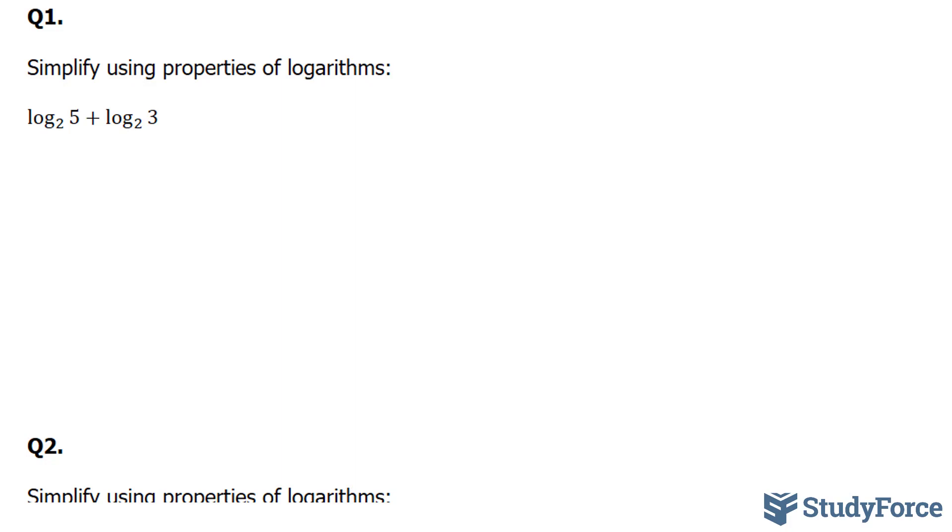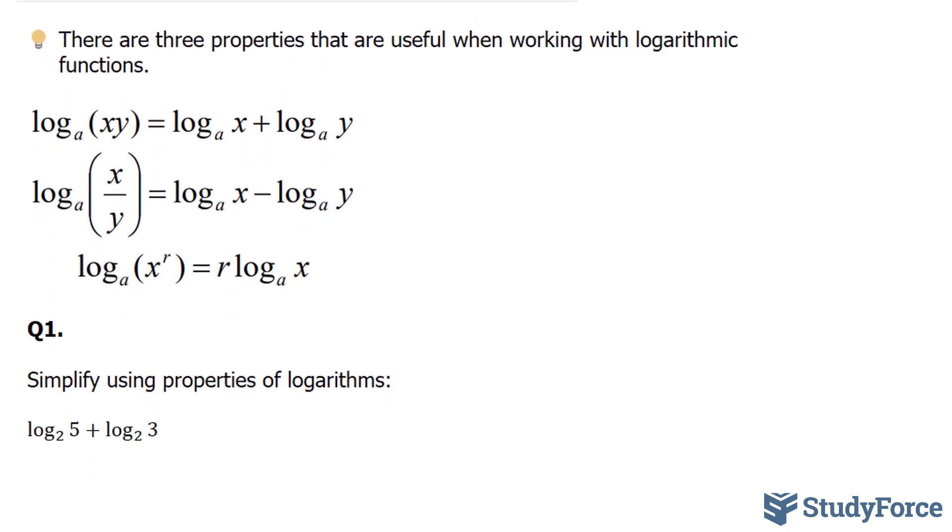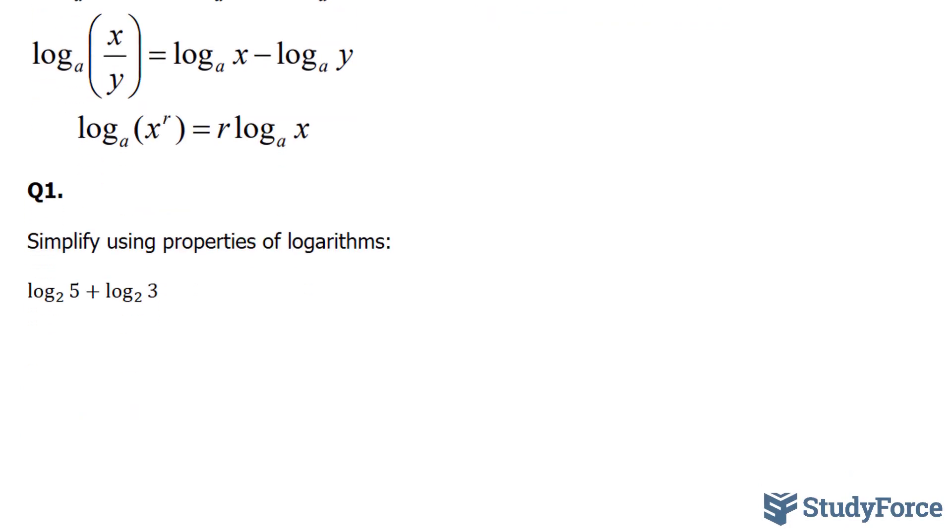The rule that we'll be using is the product rule, which is shown right here. And it says that if you have two logs that are being added, you can combine the x and the y. In our case, it's 5 and 3. Combining meaning multiply. So we end up with log base 2, that doesn't change, 5 times 3 is 15.